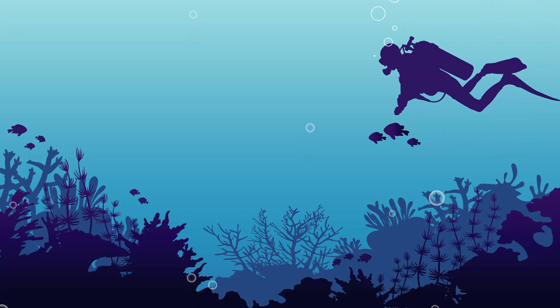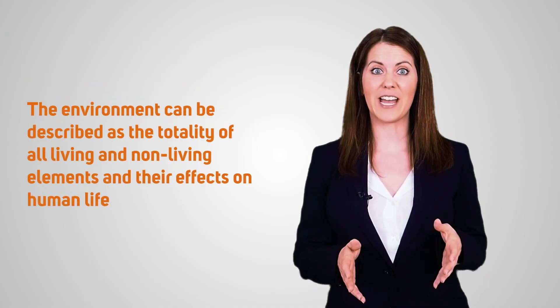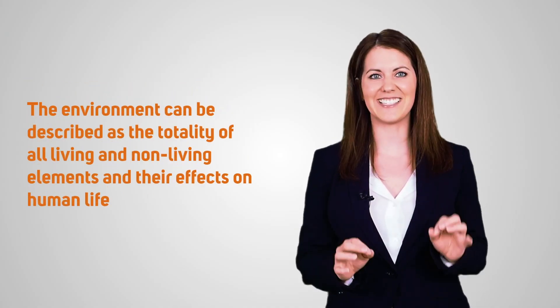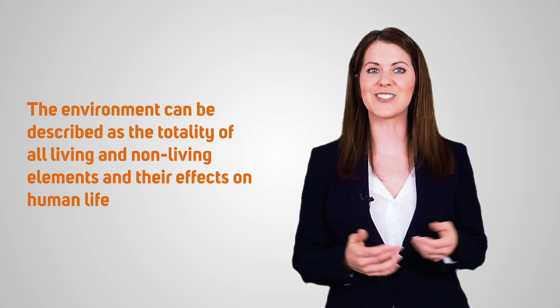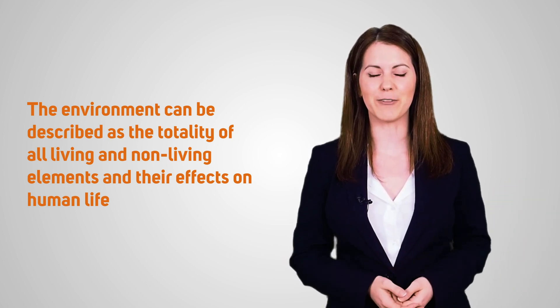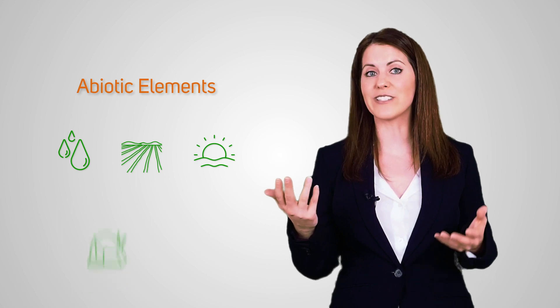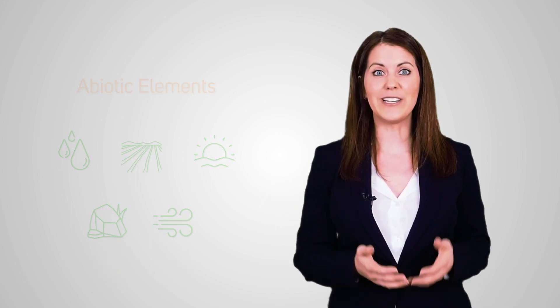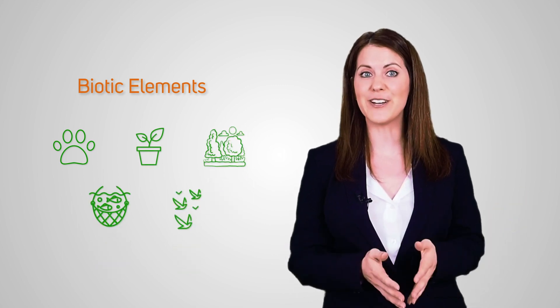To start off, let's delve into what the environment actually is. The environment can be described as the totality of all living and non-living elements and their effects on human life. Non-living or abiotic elements include water, land, sunshine, rocks and air, while all living or biotic elements are animals, plants, forests, fisheries and birds.